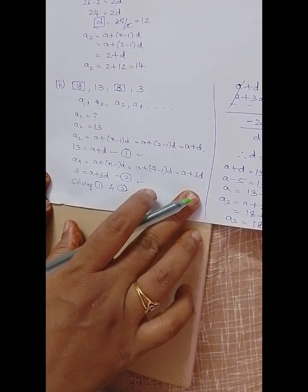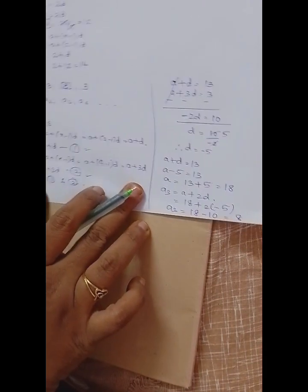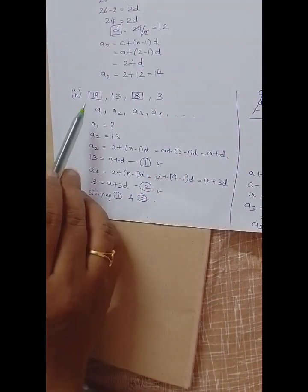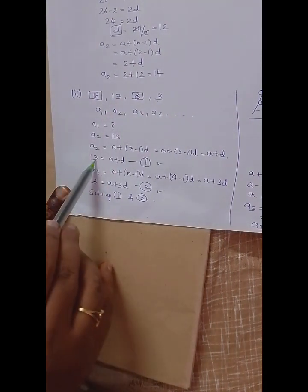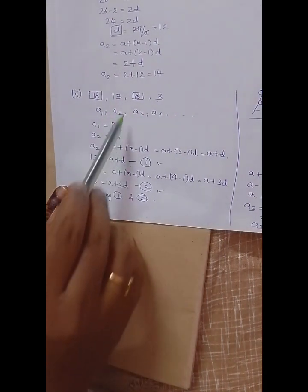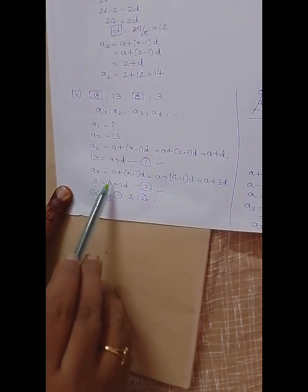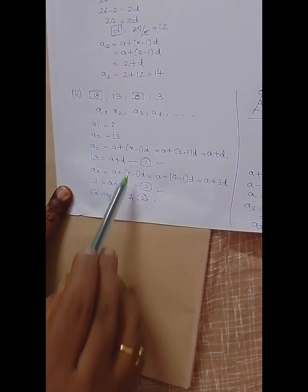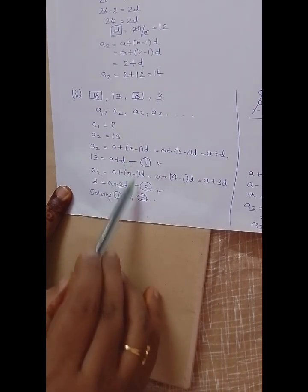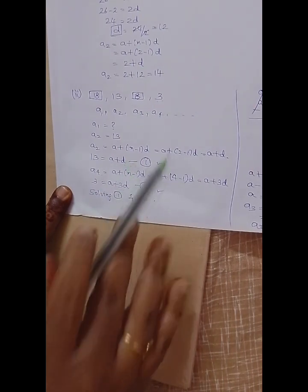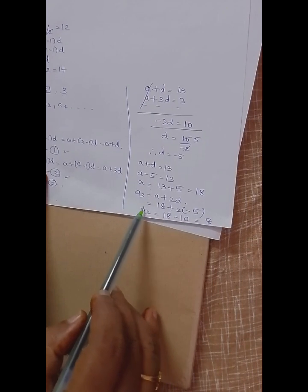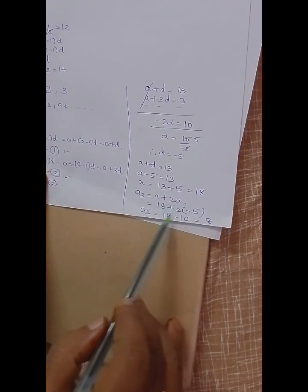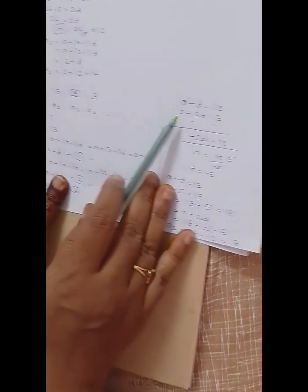So a3 is 8. To summarize: we took the second term as 13 and formed equation a + d = 13; we took the fourth term and formed a + 3d = 3; we solved both simultaneously, got d = -5 and a = 18, then found a3 = a + 2d = 8.